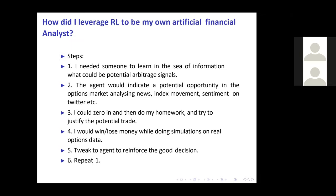How did I implement and leverage reinforcement learning for my artificial financial analyst? The steps I designed: first, I needed someone to learn in the sea of information what could be potential arbitrage signals. It's not about making trades automatically — I just need someone to parse because I cannot read terabytes of information myself. Next, the agent should indicate opportunities I need to act upon: in the options market, analyzing news, index movement, sentiment on Twitter, etc. — many sources that could indicate a potential arbitrage opportunity.